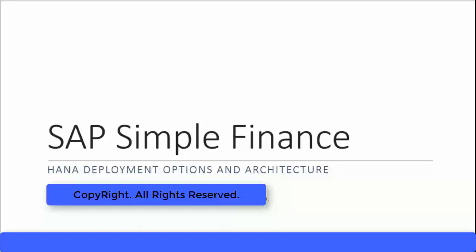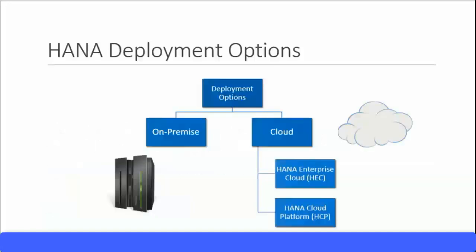Let's look at the HANA deployment options and architecture. There are two HANA deployment options: one is on-premise — the actual hardware will be on site at the client side. The second option, and more popular option, is a cloud method, where everything is stored in the cloud. In the cloud, you have two options: HANA Enterprise Cloud, shortly called HEC, or HANA Cloud Platform, called HCP.